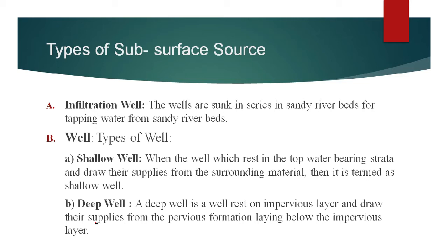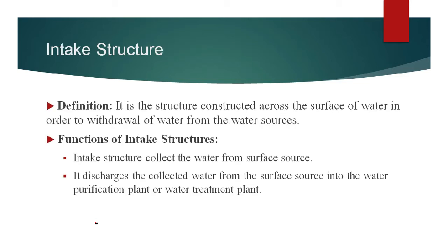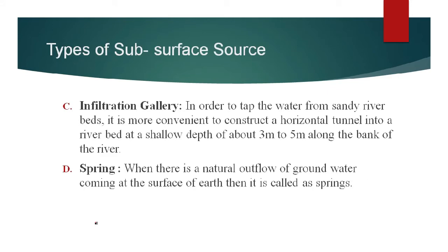A deep well is a type of open well having depth ranging from 2 meter to 20 meter. These wells are generally constructed by digging, hence it is also called as dug well. The third type of subsurface source is infiltration gallery. In order to tap water from sandy riverbeds, a horizontal tunnel is constructed into a river bed at a shallow depth of about 3 meter to 5 meter along the bank of the river — this is called as infiltration gallery.